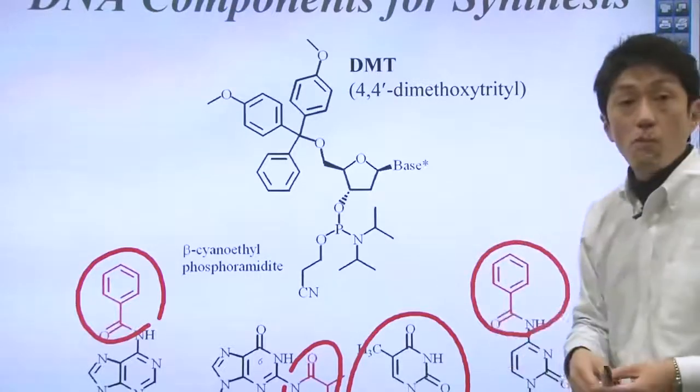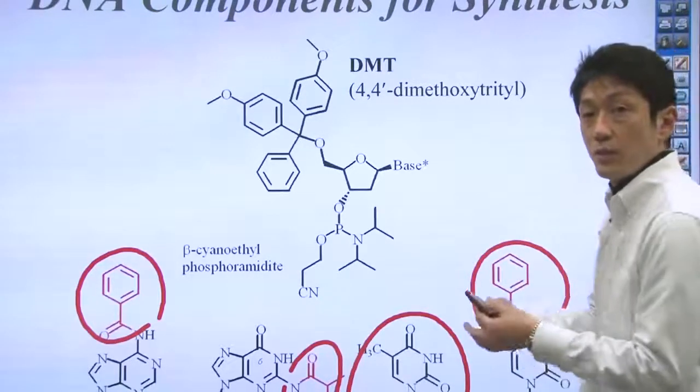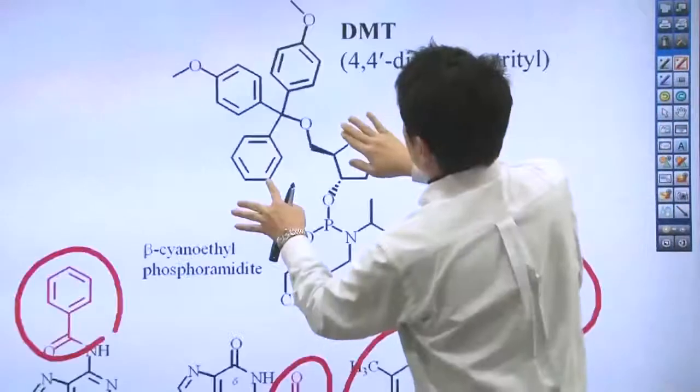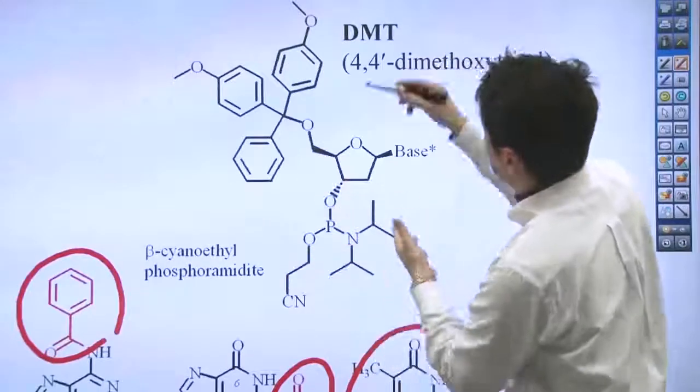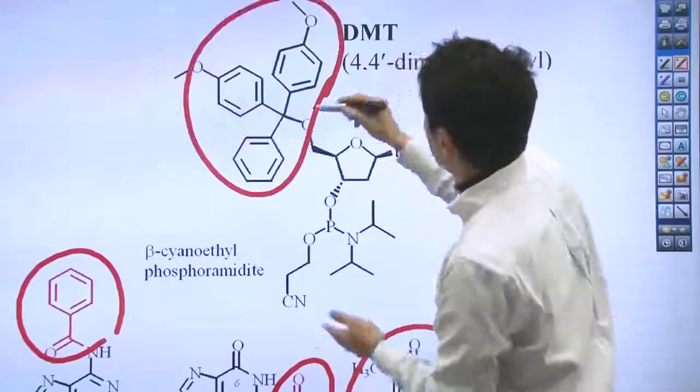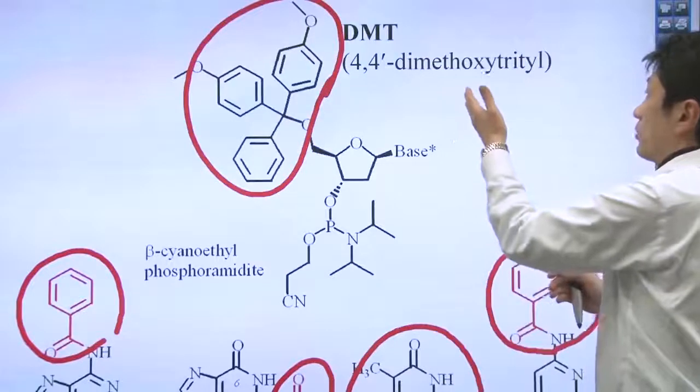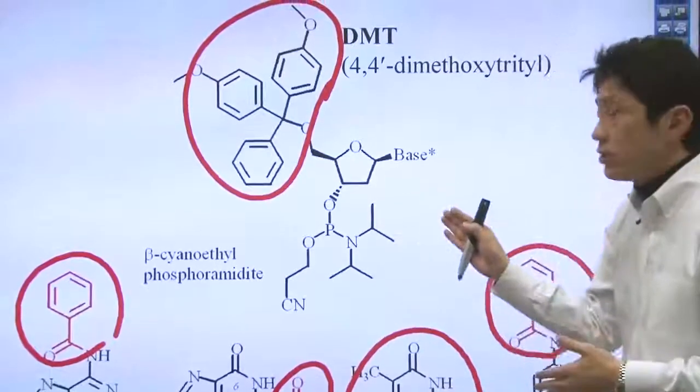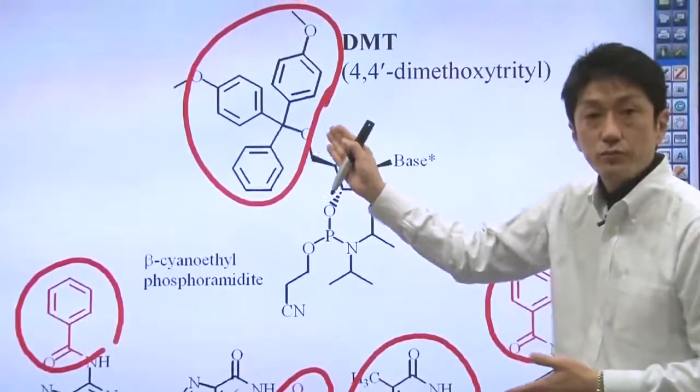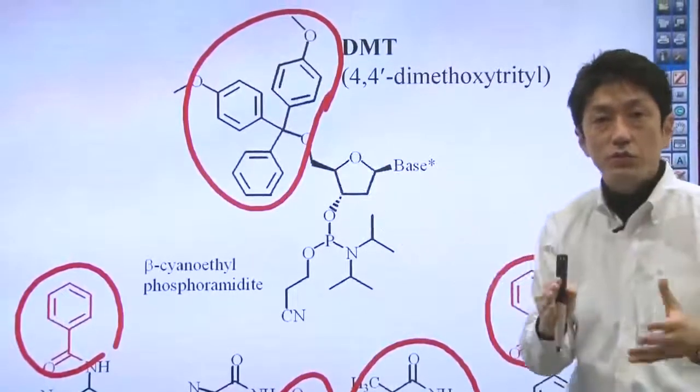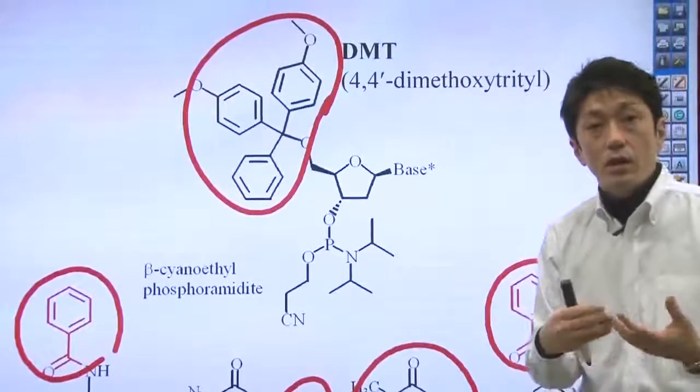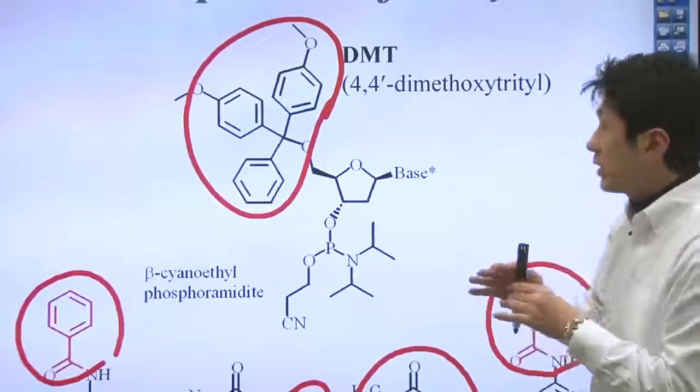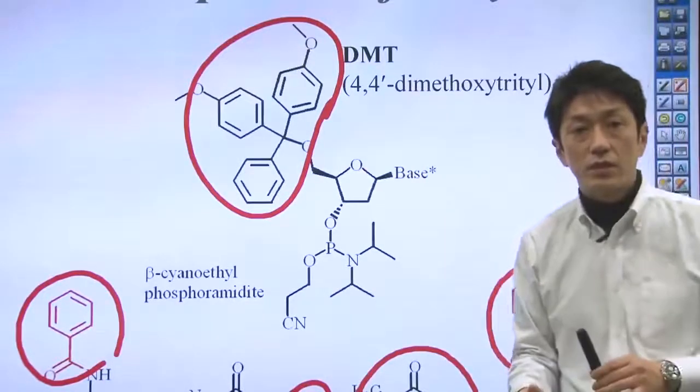The key component is the chemical group called DMT, right here. This part is called DMT, dimethoxytrityl group. DMT is attached to the OH group, to which the next nucleotide is to be bonded. If we examine the process, we can see why DMT is essential to DNA synthesis.